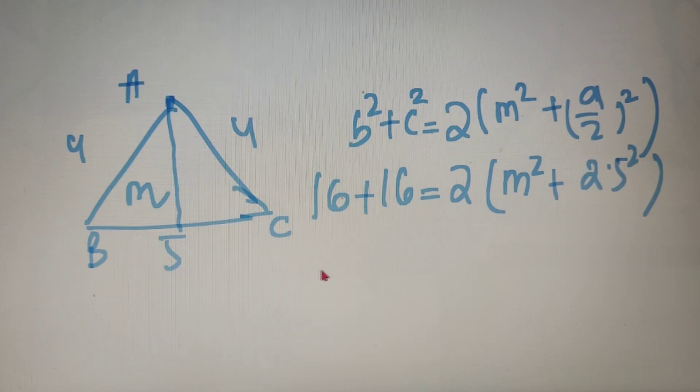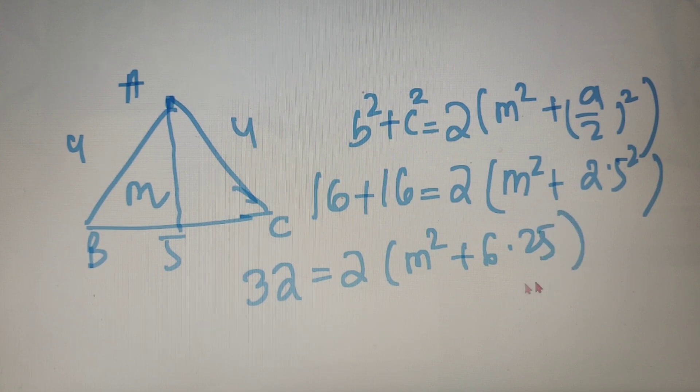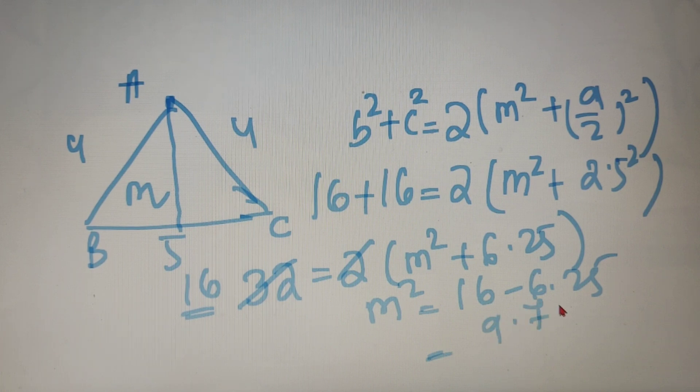So now in LHS portion, we have 32 and in RHS we have 2 times M square plus 6.25. Now 2 and 32 will get cancelled, so we will be left with 16 in LHS portion, so M square is equal to 16 minus 6.25 and which is equal to 9.75.